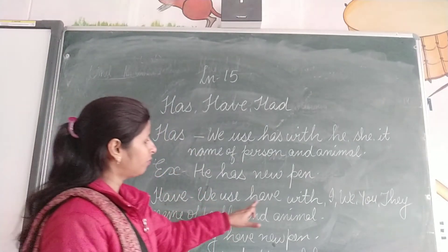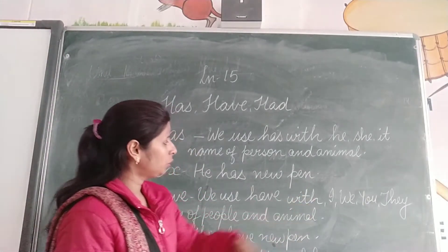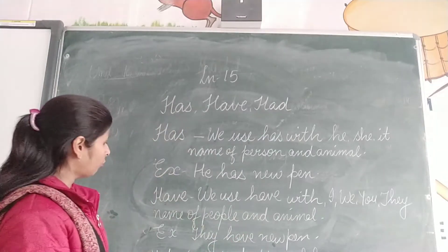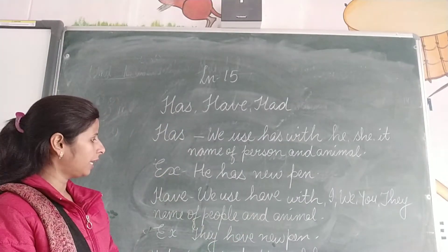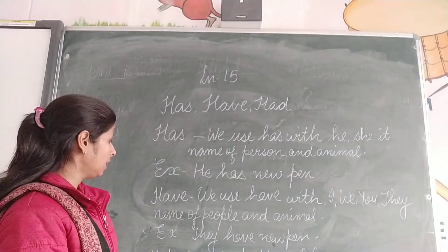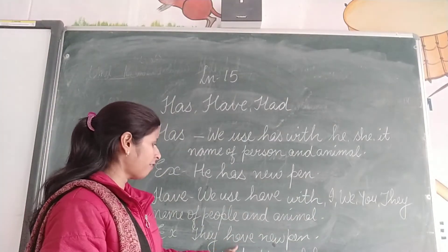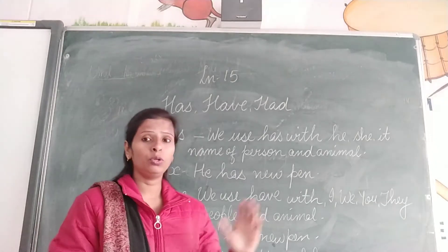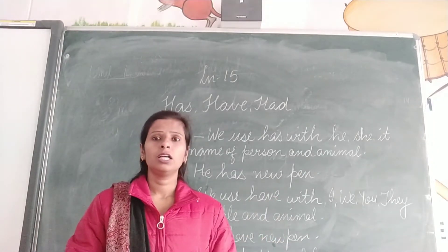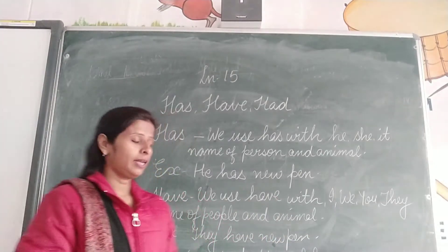Have — we use have with I, you, they, name of people and animals, yani ki ek se zayadha. They have a new pen — hun log ke paas new pen hai.